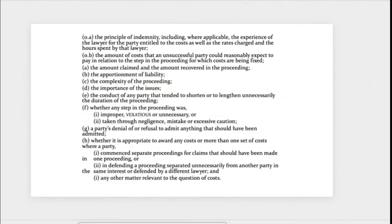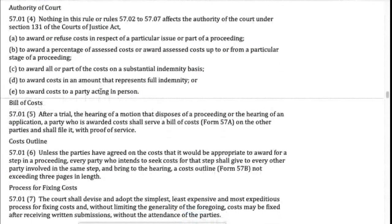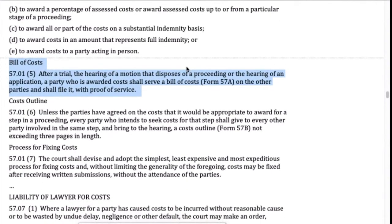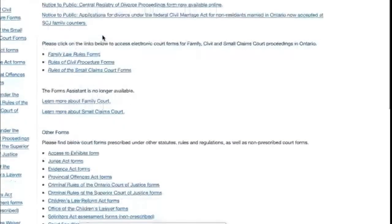That's where rule 57.01 sub 5 comes in — the bill of costs. After a trial, the hearing of a motion to dispose of the proceeding, or the hearing of an application, a party who is awarded costs shall serve a bill of costs on other parties and file it with proof of service. This bill of costs shows, if you're the successful party getting the cost award, what you paid your lawyer — basically your lawyer's bill to you, in Form 57A. Ample discretion to the trial judge including making no cost award — this creates significant appellate deference to cost awards.